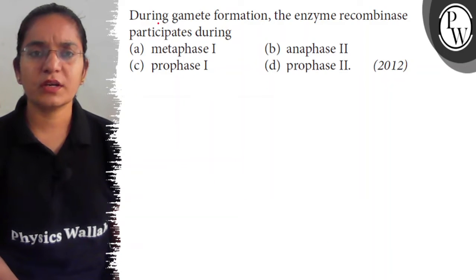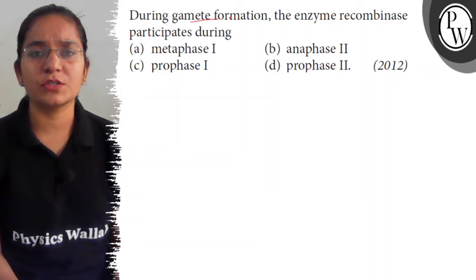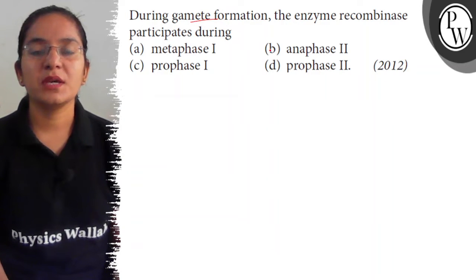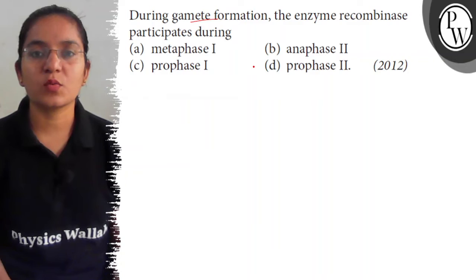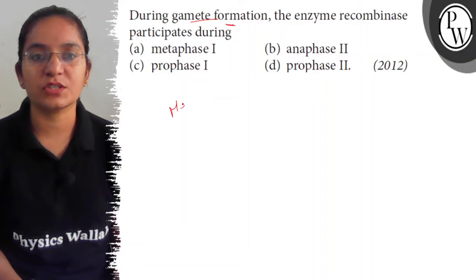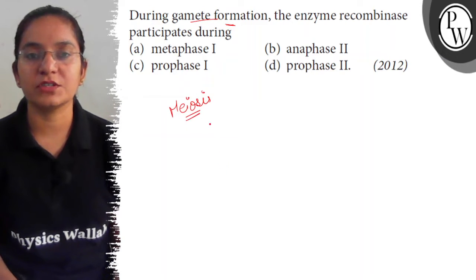The question is: during gamete formation, the enzyme recombinase participates during (a) metaphase 1, (b) anaphase 2, (c) prophase 1, or (d) prophase 2? During gamete formation, the division that occurs is meiosis, which is the reductional division.